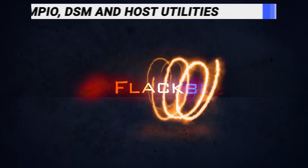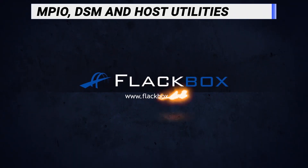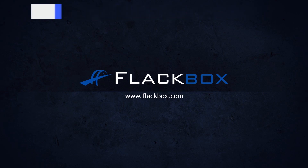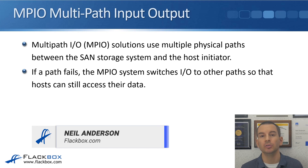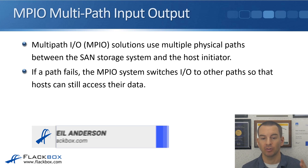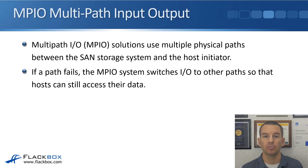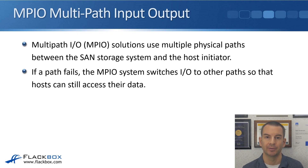In this lecture, you'll learn about the multipathing software tools for ONTAP: Multipath I/O (MPIO), DSM, and Host Utilities. MPIO solutions use multiple physical paths between the SAN storage system and the host initiators. If a path fails, the MPIO system switches I/O between the initiator and the target to other paths, so that hosts can still access their data.